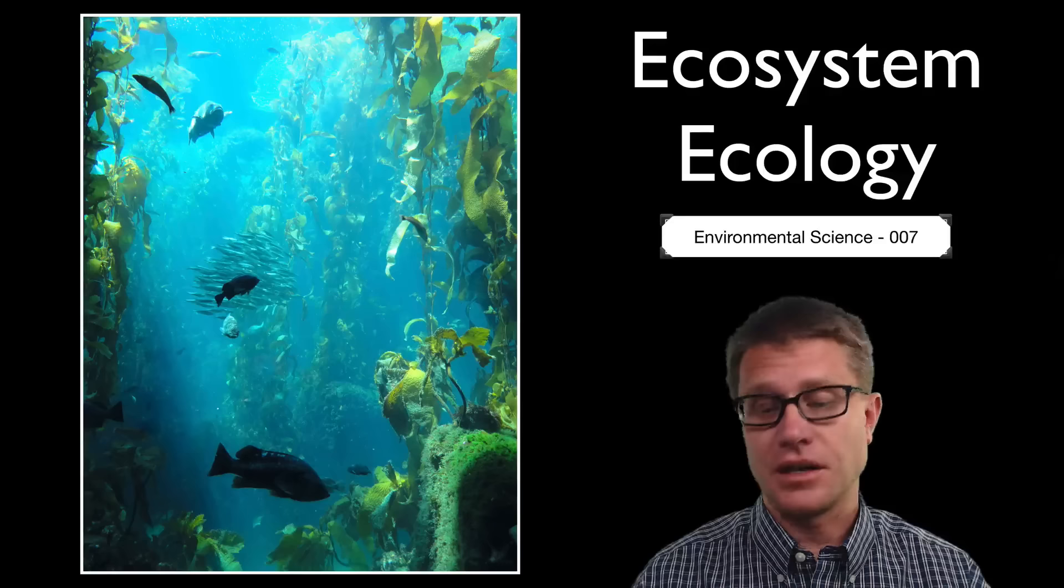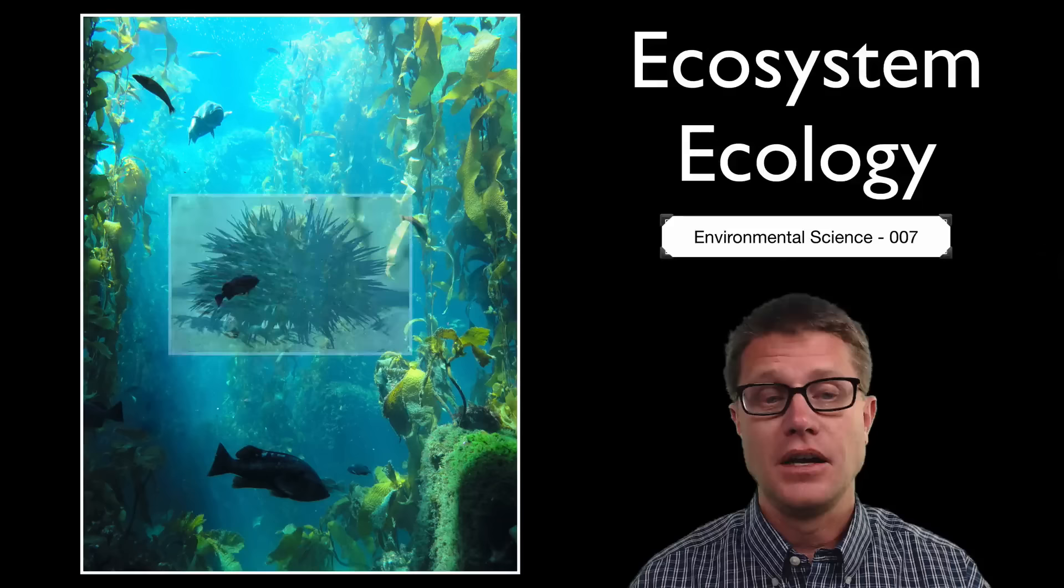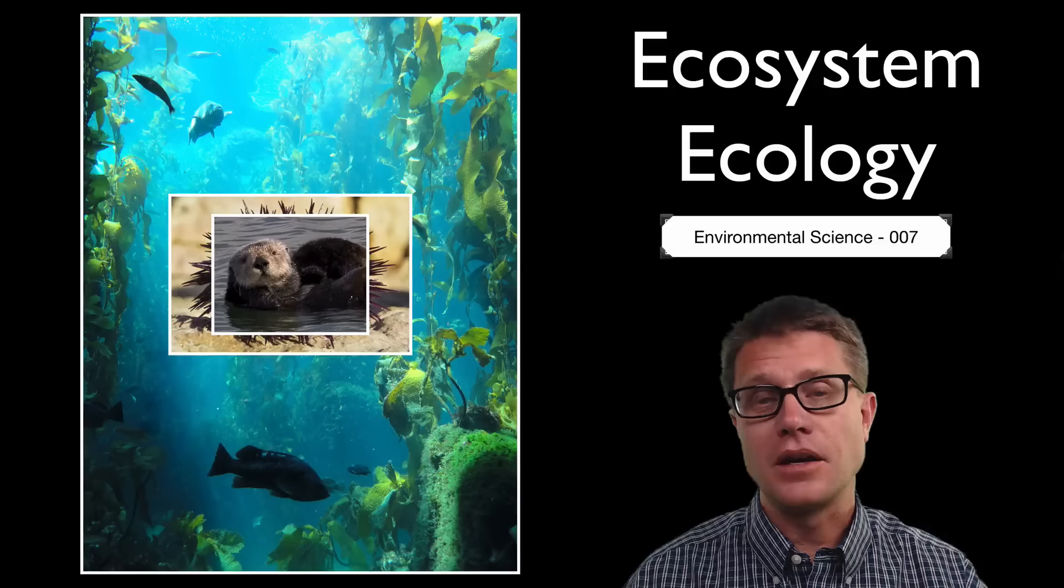Ecosystems are large areas on our planet that contain both living and non-living material. A great example could be these giant kelp forests. The kelp are producers, taking energy from the sun and converting that into food, which is eaten by herbivores like this sea urchin, which in turn are eaten by carnivores like this sea otter.